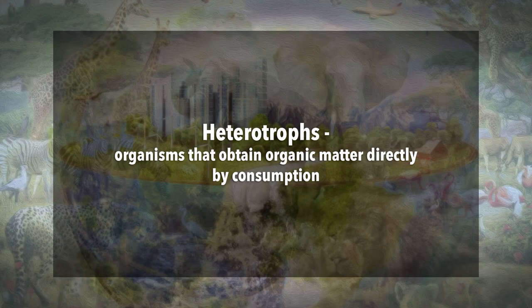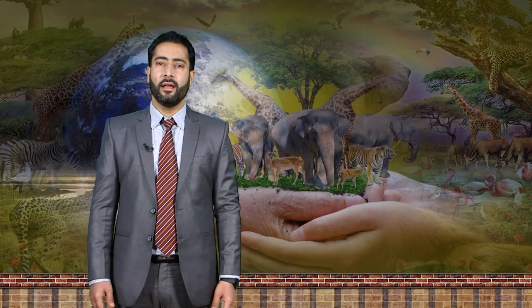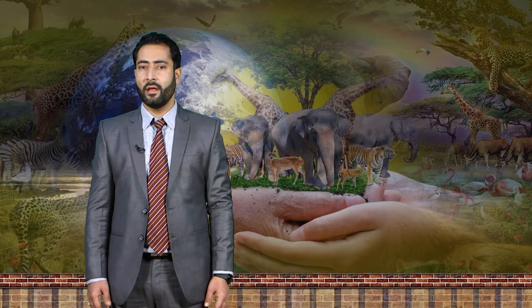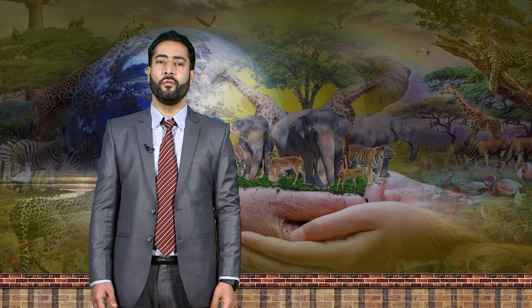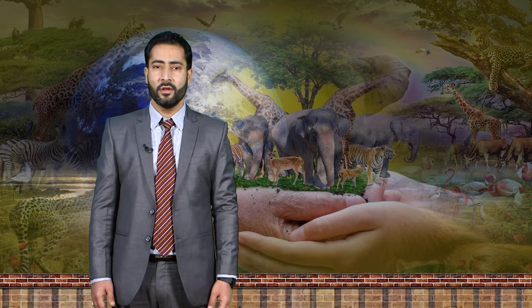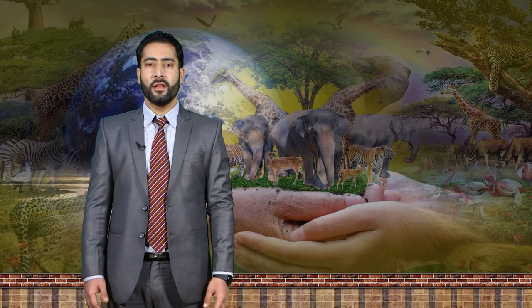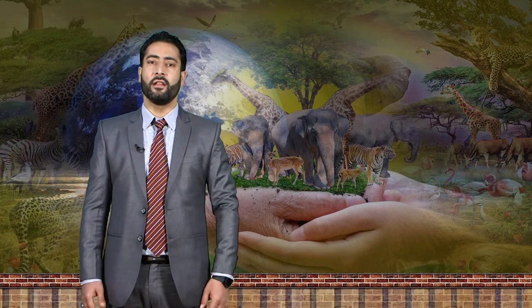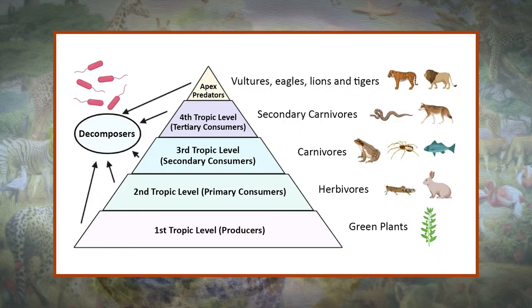The heterotrophs are organisms that obtain organic matter directly by consumption. Unlike the autotrophs, they do not have the ability to manufacture their food from inorganic sources. Thus, they hunt or gather food from other organisms. Heterotrophs are therefore referred to as consumers.